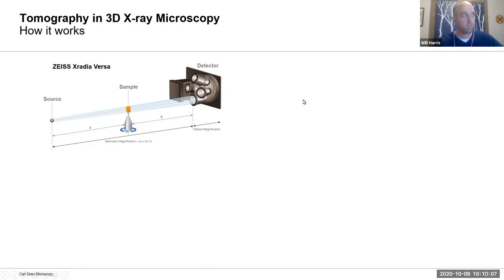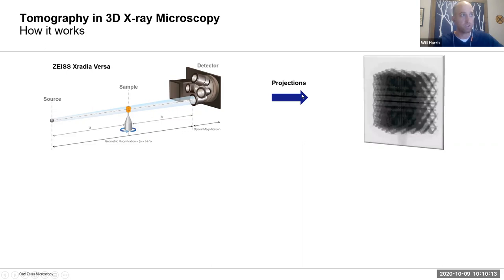The trick that we play is we collect one of those projection images, but then we rotate our sample and collect many of these projection images at different angles — this might be a few hundred or even a few thousand different images.